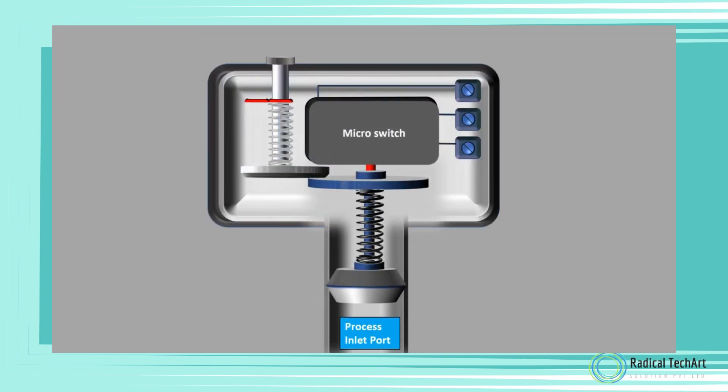Parts of a mechanical pressure switch: Process inlet port - the inlet port is the part that connects the pressure switch into the process unit. Pressure sensing element - this is the main part of the mechanical pressure switch which mechanically deforms according to the fluid pressure and actuates the switch. Diaphragm, piston, or bourdon tube is usually used as pressure sensing element.